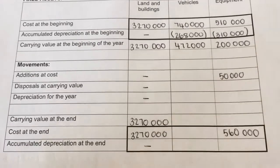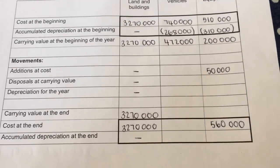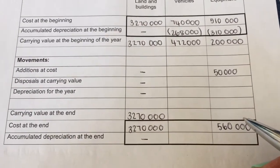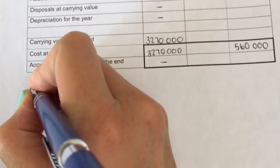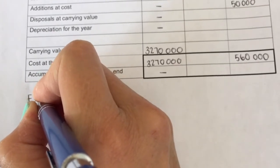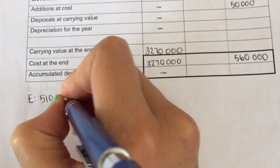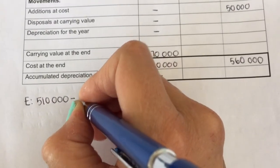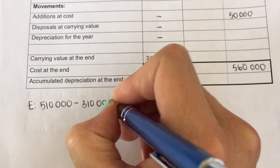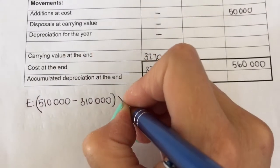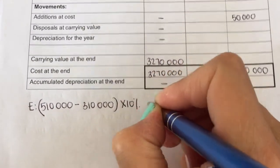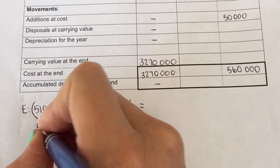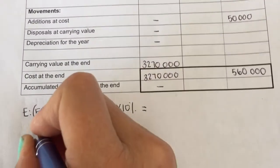I just need to work out straightforward depreciation. So if I start then with equipment, I've got 510 at the beginning of the year. Diminishing balance method means I must subtract accumulated depreciation and I'm going to multiply with 10%, and I had that for the entire year. They told me I bought the 50,000 halfway during the year.